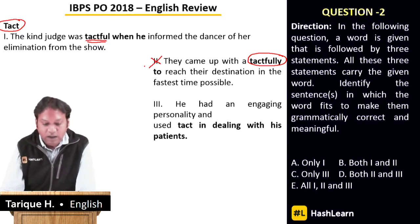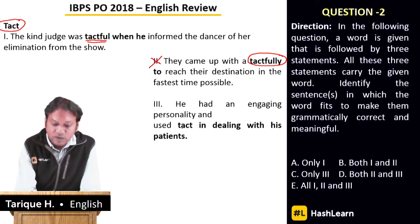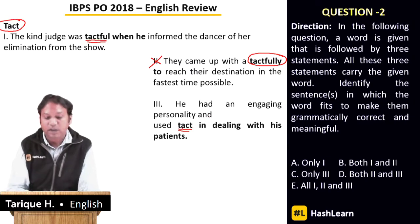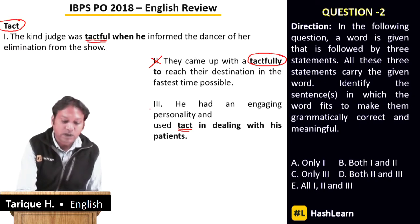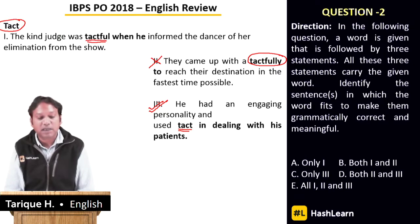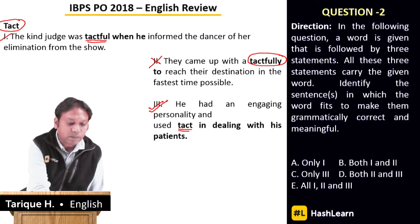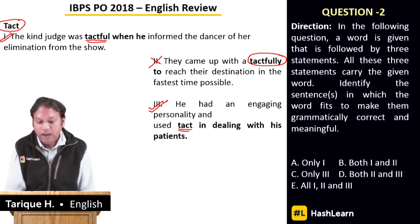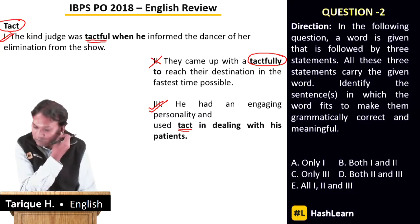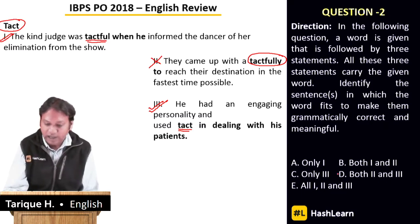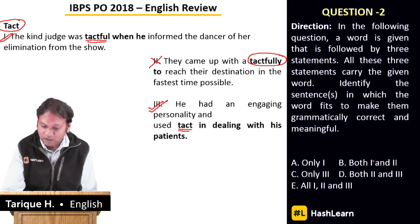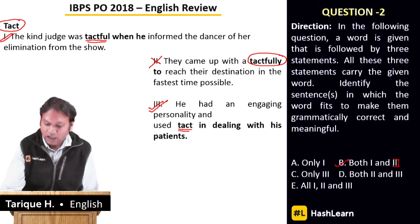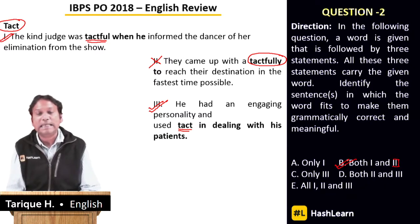In the third sentence: 'An engaging personality and use tact in dealing with his patients' — used correctly as a noun meaning skill. The word 'tact' has been used correctly in sentence one and sentence three. The answer should be both one and three, so the answer option is B.